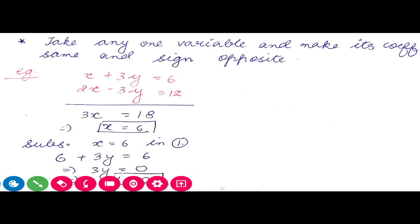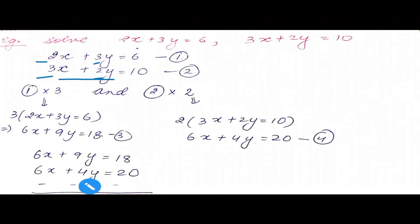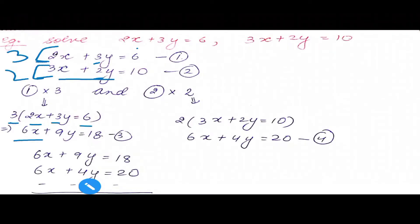This is the second problem: 2x plus 3y equals 6 and 3x plus 2y equals 10. This is a slightly difficult question. Looking at x coefficients: 2 and 3 — neither same coefficient nor same sign. Similarly for y: 3 and 2 — nothing is the same. To make x coefficients the same, multiply the first equation by 3 and the second by 2. The first equation becomes 6x plus 9y equals 18.